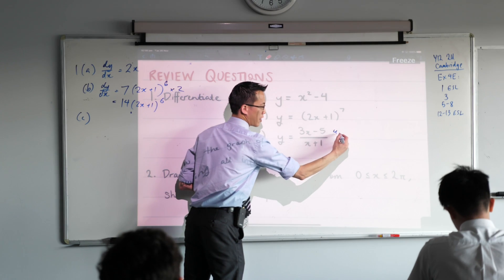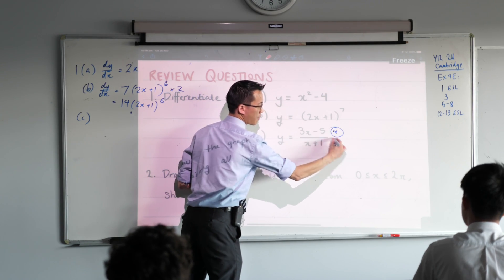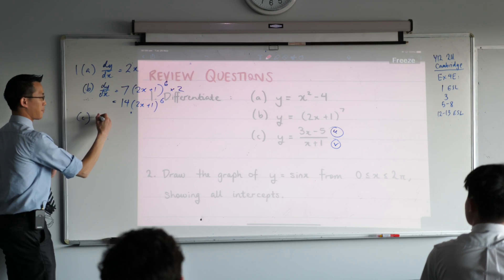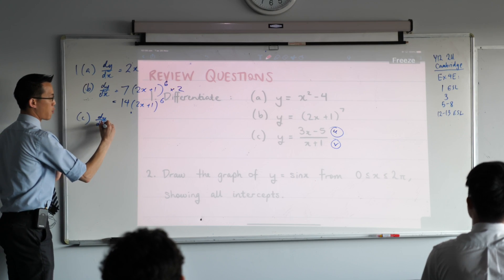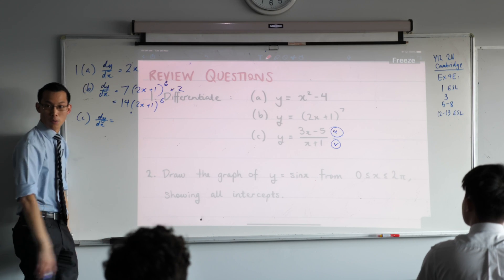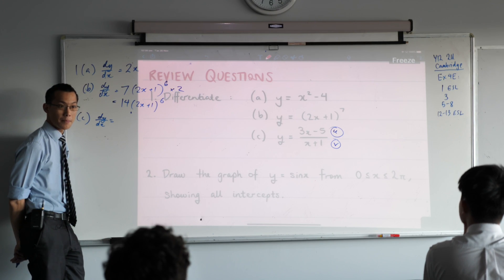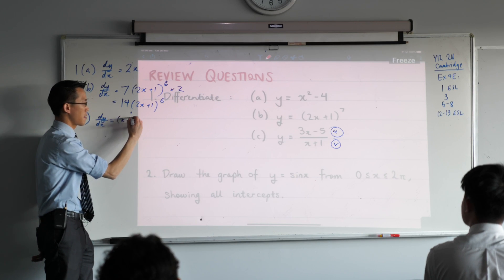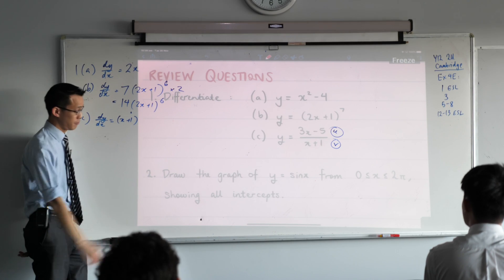You need to know which one's which. You've got a numerator here which I'm going to call u, and a denominator which I'm going to call v. Then you can launch into the quotient rule. Hopefully this is kicking around in the cobwebs up there—it's been a while, but let's enact it together. What's the first thing I'm going to write? Up the top it's v u dash. In this case u dash is 3.